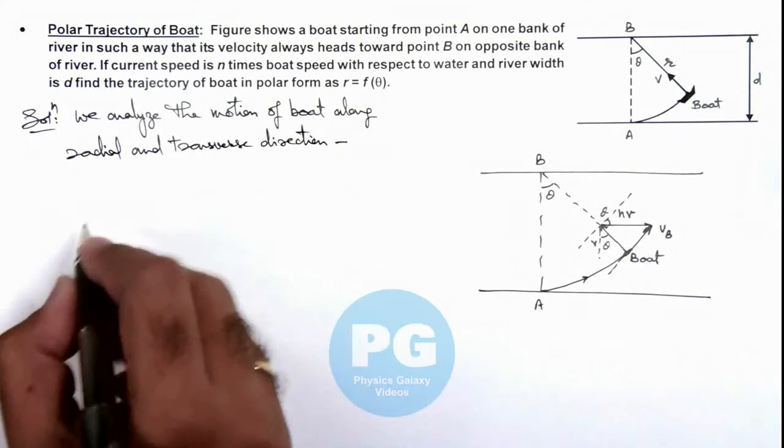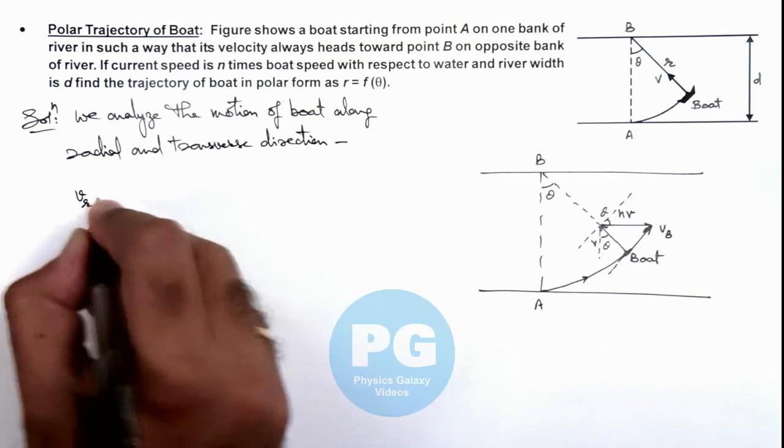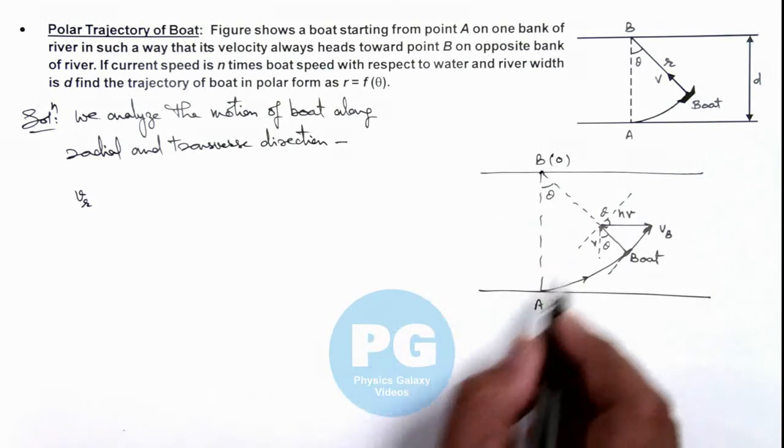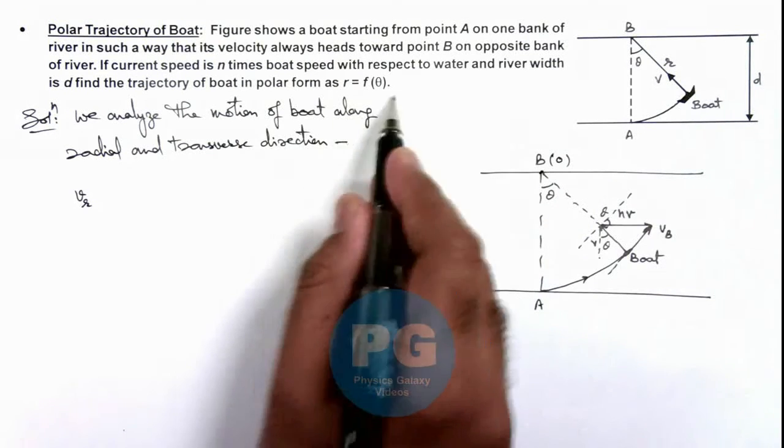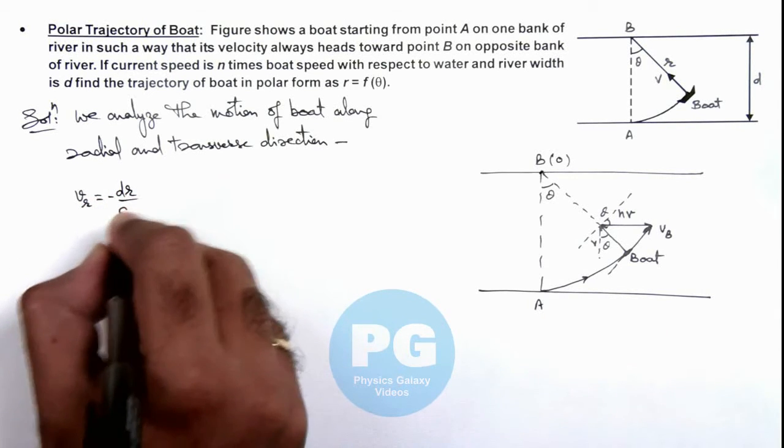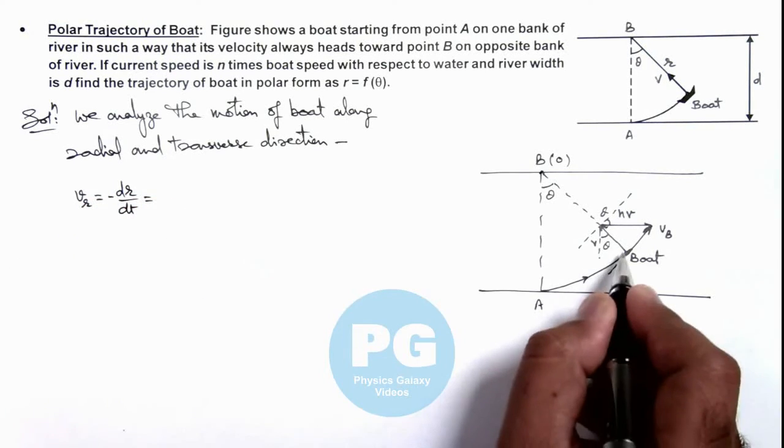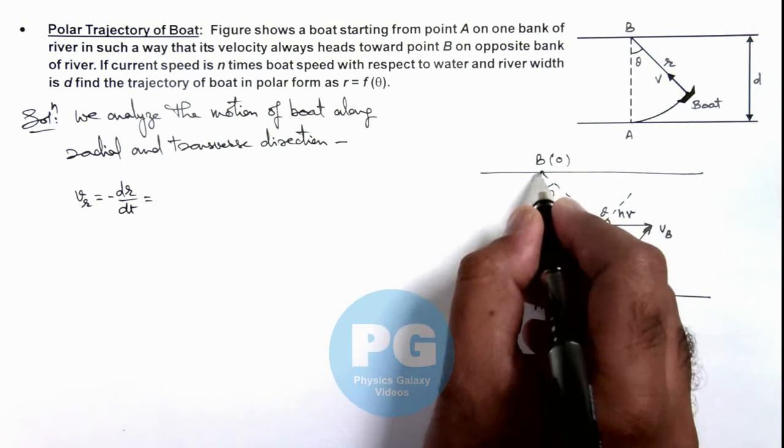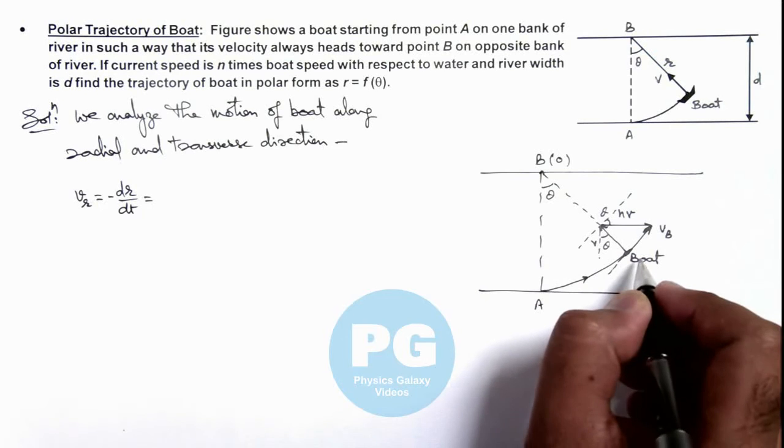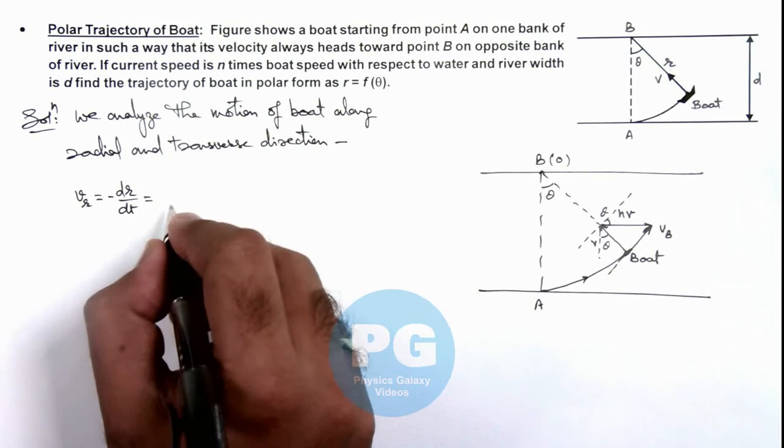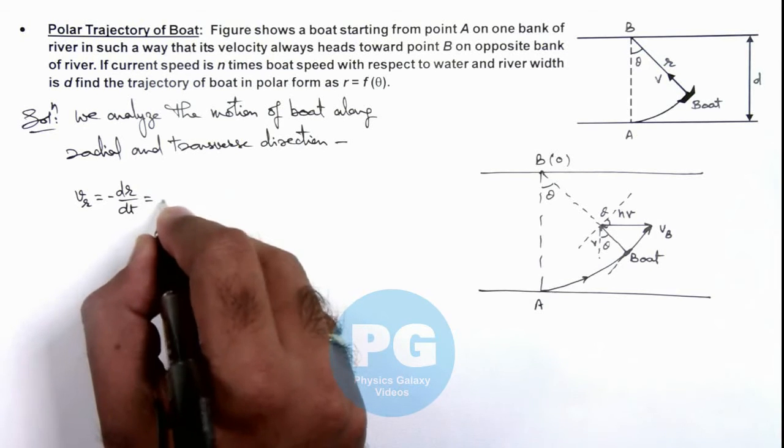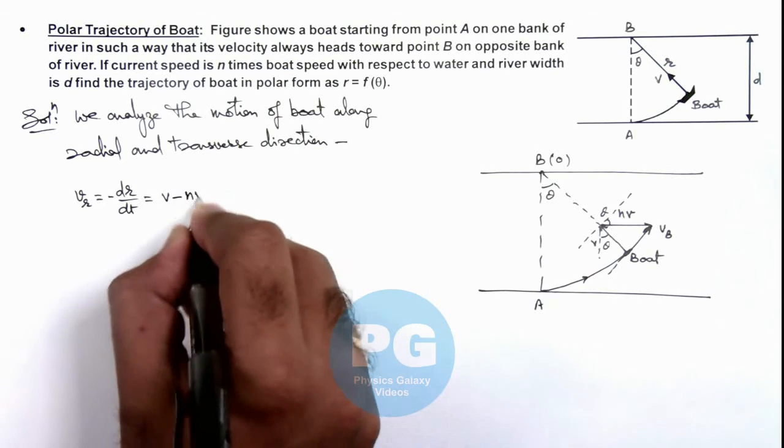So in this situation, if we calculate the radial velocity of the boat as it is heading towards point B, which we are taking as the origin of our system, as we wish to calculate r as a function of theta, here radial velocity we can write as minus dr by dt, and this can be written as v is the speed with which it is heading toward point B and nv sine theta is the speed with which it is moving away from B. So this can be written as minus dr by dt equals v minus nv sine theta.